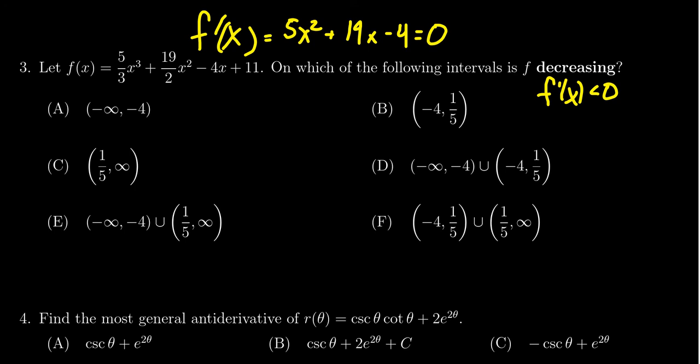Since we have a quadratic function, we could use the quadratic formula, complete the square, or try to factor it if possible. I'm going to try factoring it. If I take the first and last coefficient and multiply them together, 5 times -4 equals -20. I need factors of -20 that add to be 19, so I suggest 20 and -1.